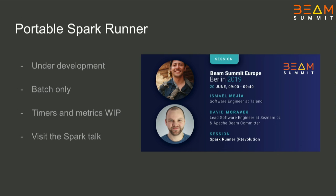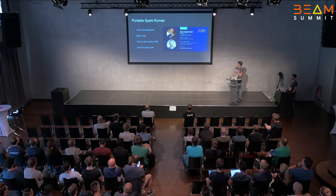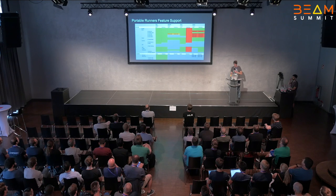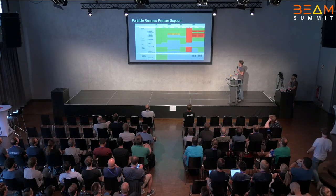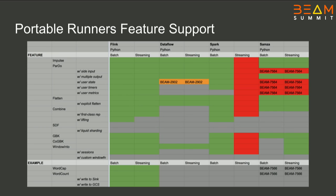The third open source portable Beam runner is Spark, which is also under active development. This portable runner supports only batch. There are still a few to-dos on the timers and metrics side, but otherwise the batch support is complete. Please learn more in Ismail and David's talk tomorrow morning. To sum it up, the capability matrix for portable runners shows that Flink is pretty much complete, Spark is pretty complete on the batch side but not streaming, and Samza supports both batch and streaming but not all model features yet.